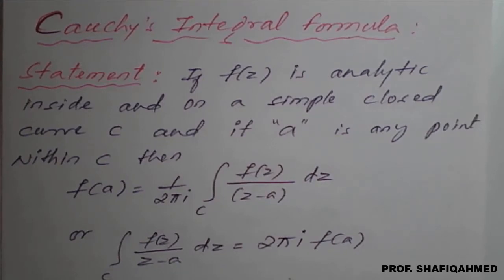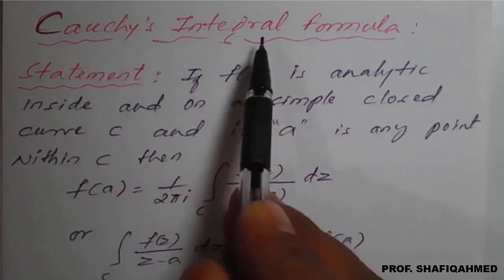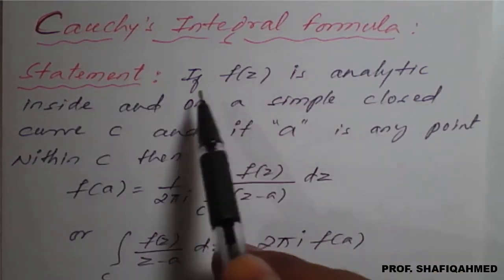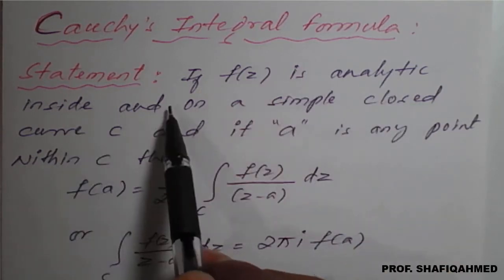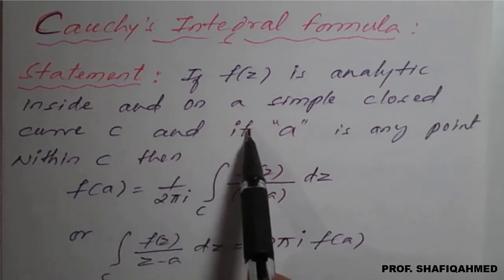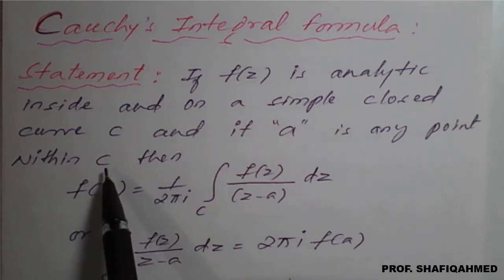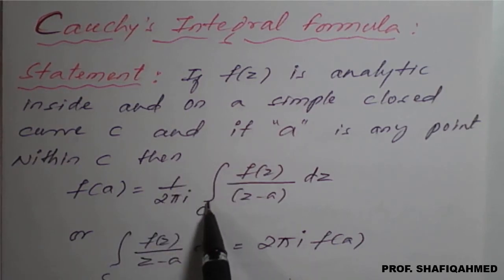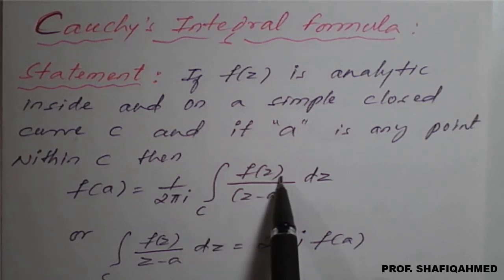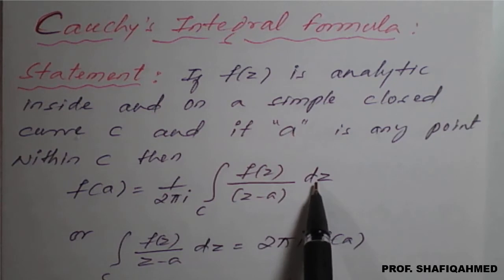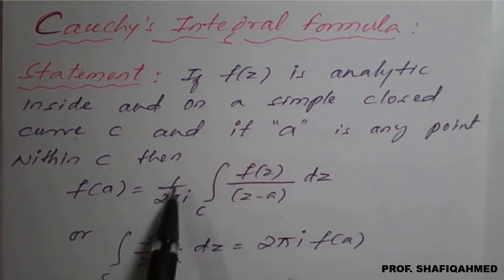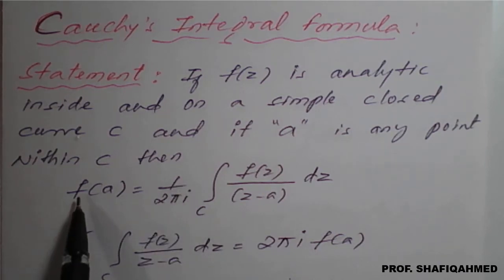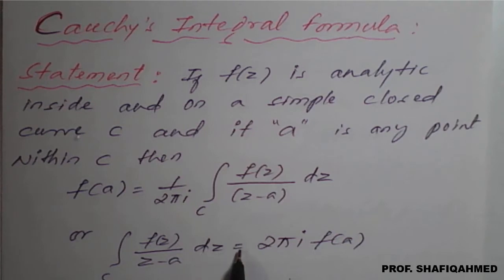Hello everyone. In this lecture, we will see Cauchy's integral formula statement. If f(z) is analytic inside and on a simple closed curve C, and if a is any point within C, then f(a) is equal to 1/(2πi) times the integration over the circle C of f(z)/(z−a) dz. Equivalently, the integral over C of f(z)/(z−a) dz equals 2πi·f(a).